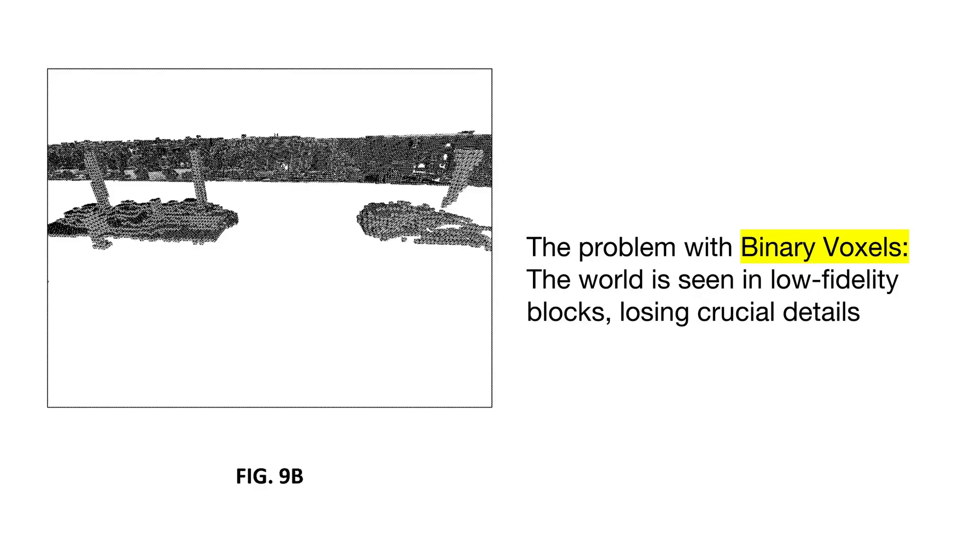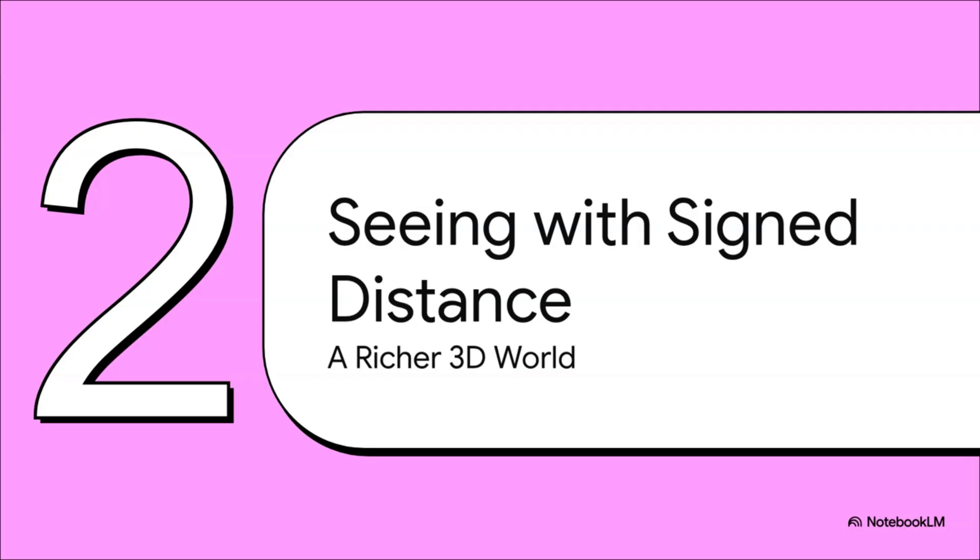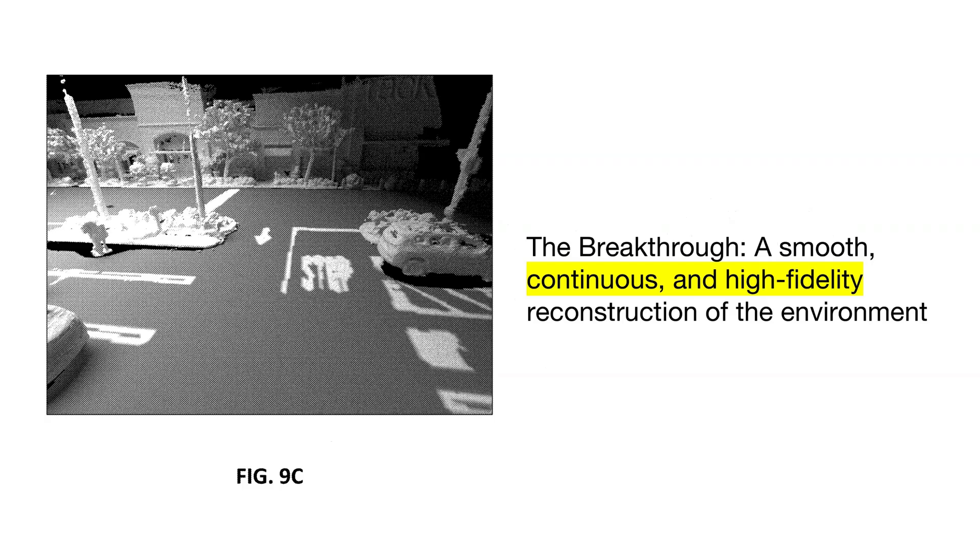So this is the big question: how did Tesla solve this puzzle? Well, their patent lays out a totally new way of thinking about it. They figured out a way to build an incredibly rich, high-fidelity 3D model of the world using, get this, only the standard 2D cameras that are already on the car.